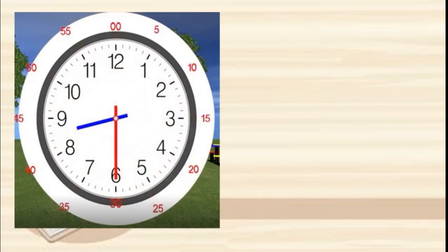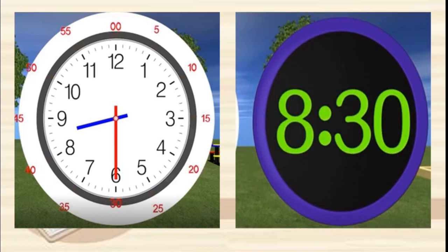Now read this. Here also you can see two hands. The smaller one — the hour hand — is between 8 and 9. And the minute hand is on 6, that is the longer hand. Come on, dear students, read the time. Here we can say 8:30. In our daily language, how we say — 8:30.